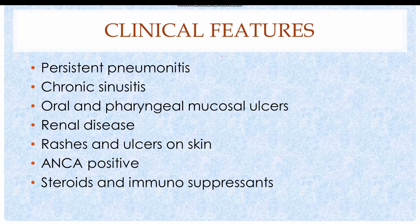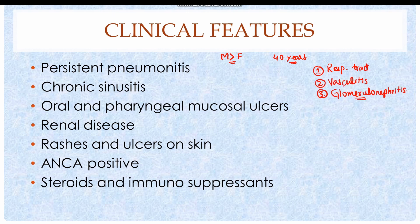The disease more commonly affects males than females, with an average age of 40 years. It is characterized by a triad of respiratory tract involvement, vasculitis, and glomerulonephritis. Symptoms of upper respiratory tract involvement include persistent pneumonitis, present in almost 95% of cases, and chronic sinusitis, present in approximately 90% of cases.